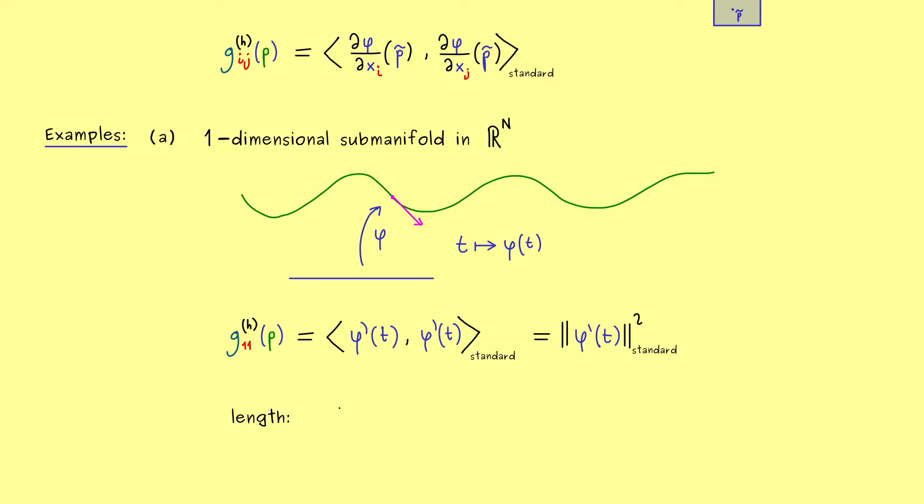Now maybe you already know how to calculate the length of a curve in R^n by using an integral. In fact, if the parameterization phi is defined on the interval a to b, then we have an integral from a to b. And inside the integral we simply find the norm of phi prime t. So what we see here is that the Riemannian metric occurs inside the integral when we want to calculate a length. More precisely, we have the square root of the determinant of g. The determinant might not be clear yet, but this is the generalization we will do soon. So for example, for a two-dimensional manifold, this construction should give the area of the manifold.